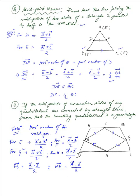Noting that HE = (A − C)/2, we can instead consider EH = (C − A)/2, which is completely equal to FG. Therefore FG is parallel to EH and their magnitudes are equal. By symmetry the other two sides EF and HG will satisfy the same condition. Therefore EFGH is a parallelogram: the midpoints of the consecutive sides of any quadrilateral always form a parallelogram.